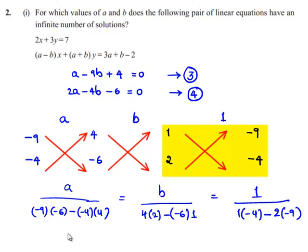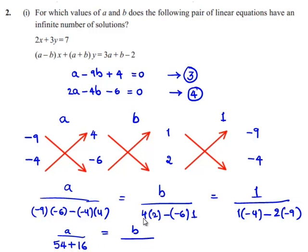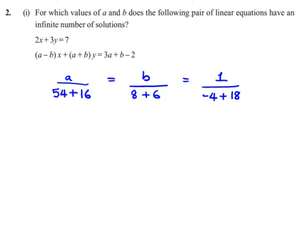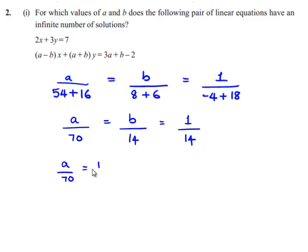By cross multiplication: a divided by [(minus 9)(minus 6) minus (minus 4)(4)] equals b divided by [4 times 2 minus (minus 6) times 1] equals 1 divided by [1 times (minus 4) minus 2 times (minus 9)]. This becomes a by [54 plus 16] equals b by [8 plus 6] equals 1 by [minus 4 plus 18], which is a by 70 equals b by 14 equals 1 by 14.